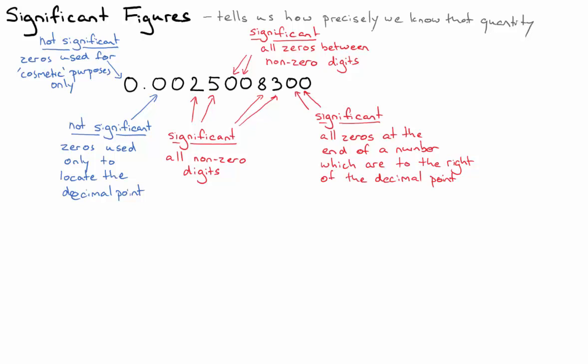And notice here that I've said that that rule holds when those zeros at the end of a number are to the right of a decimal point. And we'll see in the next example why that is an important distinction to make.